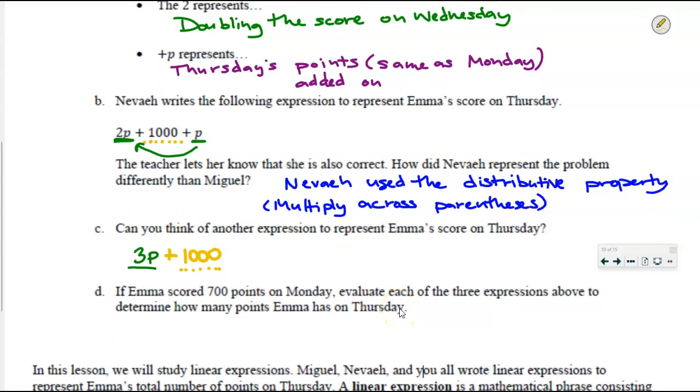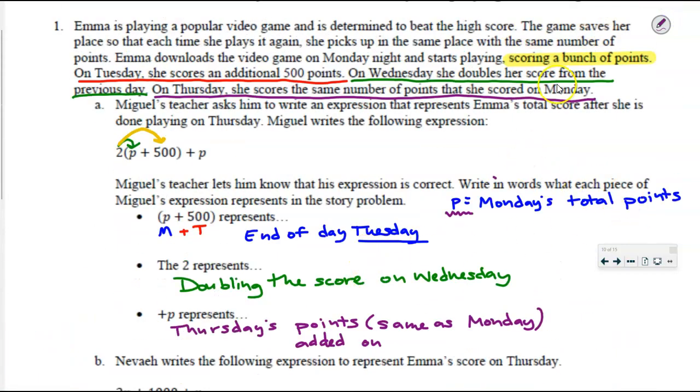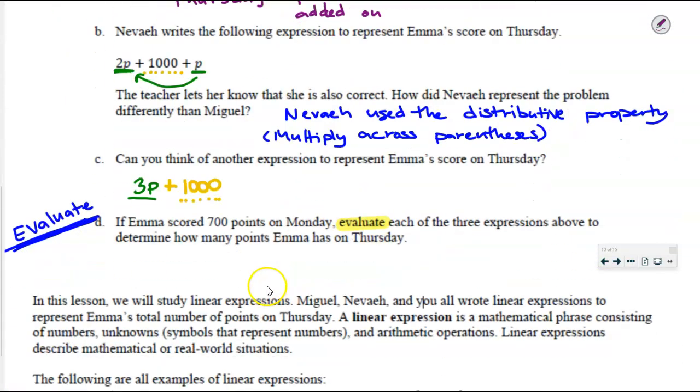If Emma scored 700 points on Monday, evaluate each of the 3 expressions above to determine how many points Emma has on Thursday. This is a new word, a new vocabulary word. I need you to highlight it. We're also going to write it in big bold letters off to the side because it is going to be part of your homework, part of your vocabulary. We're going to leave ourselves some big notes that our eyes are going to be drawn to.